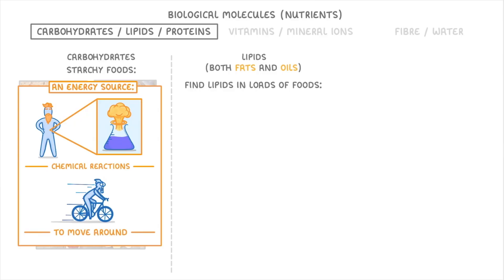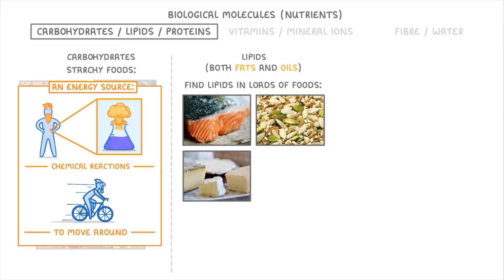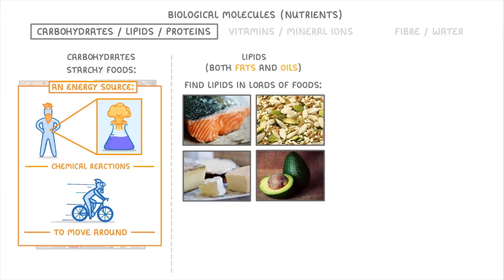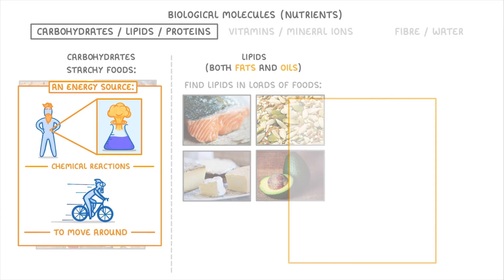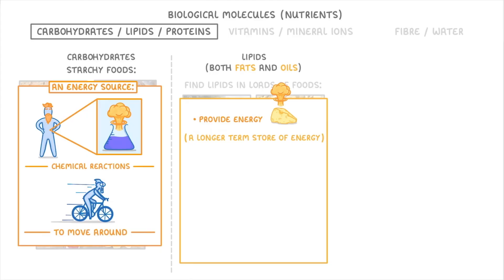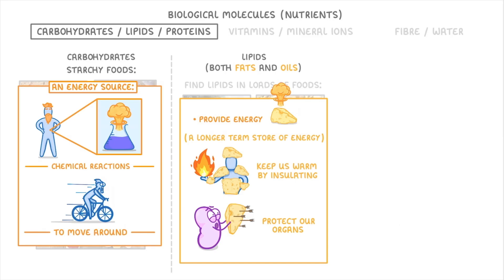You find lipids in loads of foods, but particularly in oily fish, nuts and seeds, dairy products and avocados. Their main role is to provide energy, just like carbohydrates, but often they act as longer term stores of energy because we can store lots of fat for use later. They also do lots of other useful things, like keep us warm by insulating us and protecting our organs.